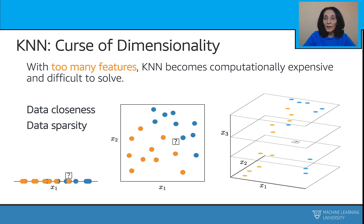As someone once said, a high-dimensional space is a lonely space. Not only are points increasingly far from the mean on average, they are also increasingly far from each other. If two points are one unit away in each dimension: on a line in 1D, they are one unit apart; in two-dimensional space, they are square root of 2 apart; in three-dimensional space, square root of 3. The distance grows as the dimension grows to be the square root of n, where n is the number of dimensions.